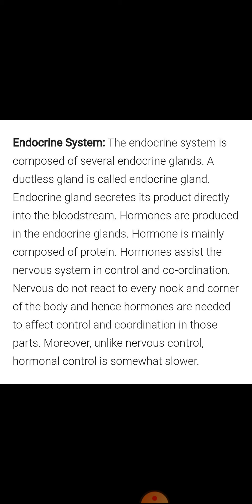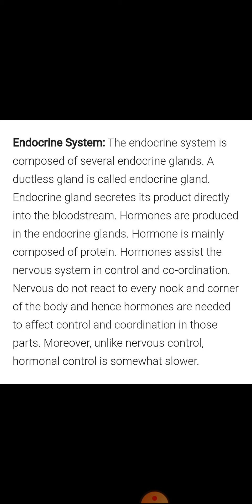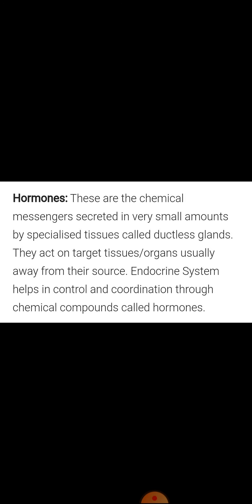Hormones are basically composed of proteins, and they assist the nervous system in control and coordination. The nervous system does not react to every part of the body, hence hormones are needed to affect control and coordination in those parts. Hormones are the chemical messengers — they are protein messengers — because they are released into the bloodstream and travel to the organ where they need to create an effect, which is why they are called messengers.